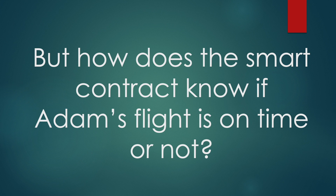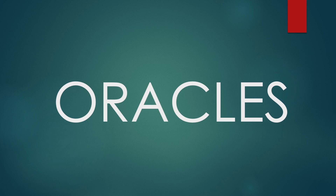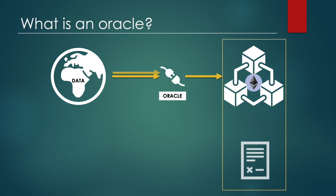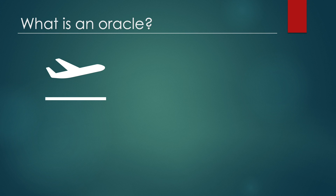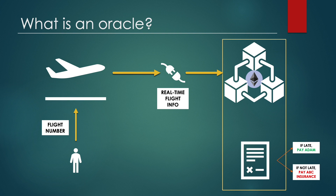But how does the smart contract know if Adam's plane is on time or not? The answer is oracles. An oracle sends data from the outside world to a blockchain such as Ethereum, which is the most commonly used blockchain for smart contracts. A smart contract on the blockchain can then use the data to execute itself, typically to make a decision whether to dispense money and to whom. In the flight insurance example, the oracle feeds the smart contract with real-time flight information based on the flight number provided by Adam, allowing the smart contract to determine whether the flight was on time or late.